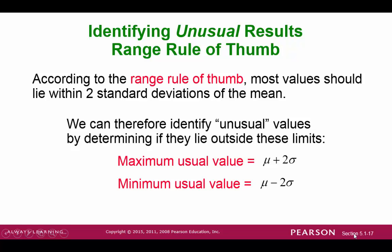We've seen the range rule of thumb back when we were studying the mean and standard deviation in chapter 3. So the idea is that if you're within two standard deviations of the mean, you have a set of usual values. Anything outside of that would be considered unusual.